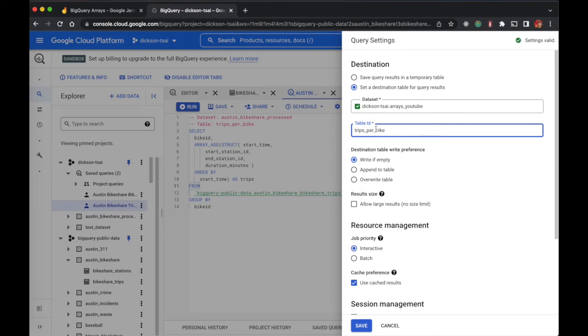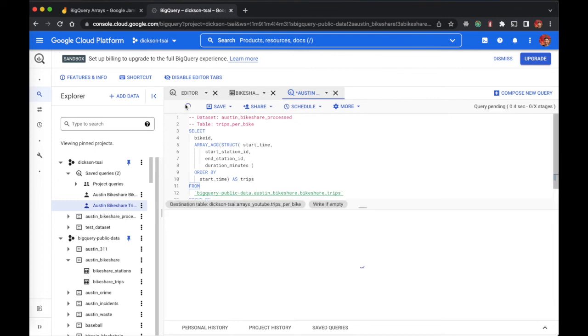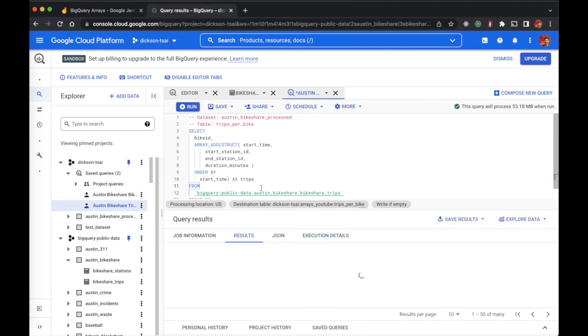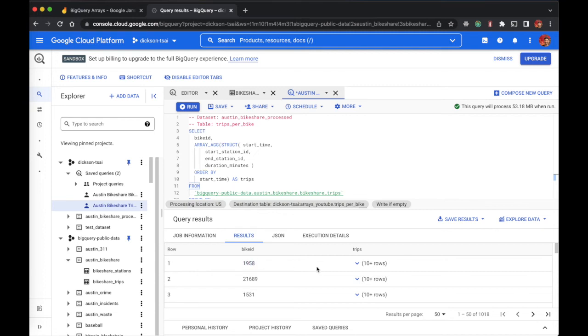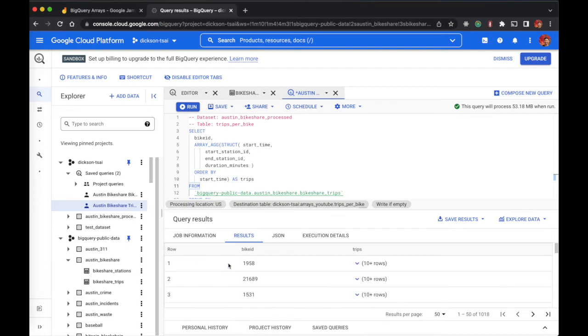And once we create that data set, we can name this trips per bike. And now I have a new data set that is based on arrays. So let me run this query. So it doesn't take too long to run because this data set is pretty small. Now that the results are here, and you can see each bike has a list of trips, each with its start time, duration, and the stations.